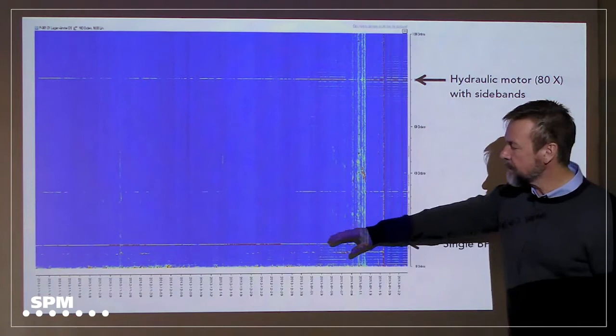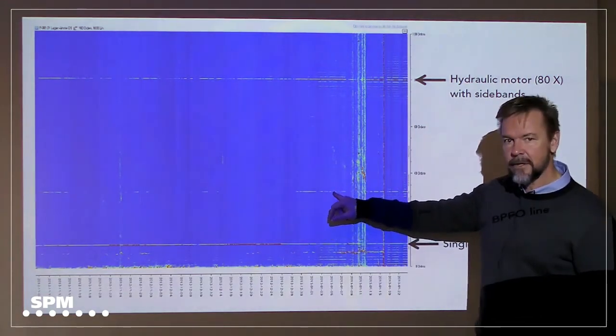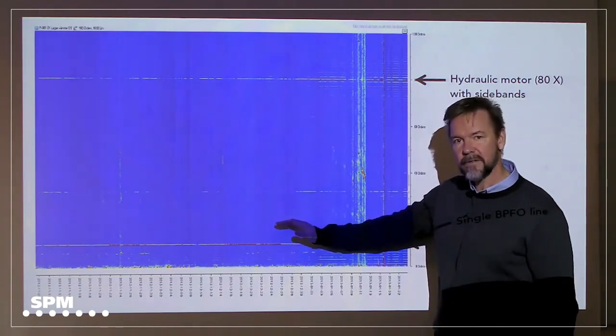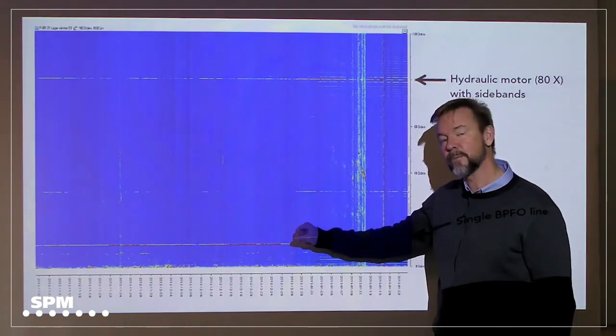And there is no harmonics there. It's empty. This line here is coming from the roller, and this is the asynchronous motor, but no harmonics. So this is a good sign. This transducer is perfectly mounted.